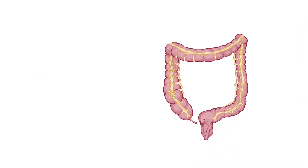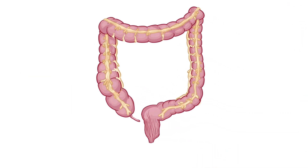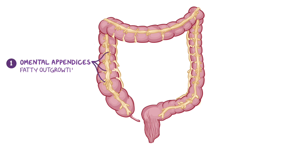There are three main features that distinguish the large intestine from the small intestine, besides the fact that the large intestine has a larger caliber. First, the large intestine has omental appendices, which present as fatty outgrowths covered by visceral peritoneum.